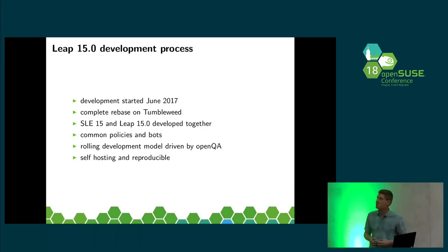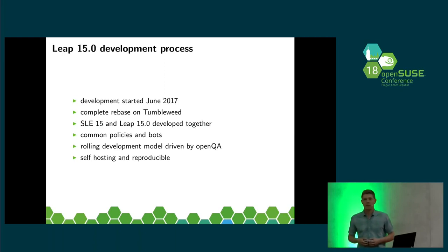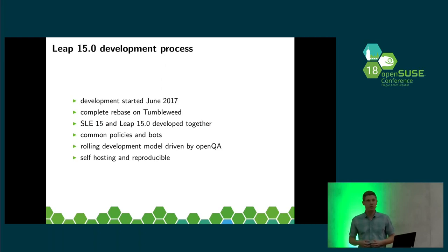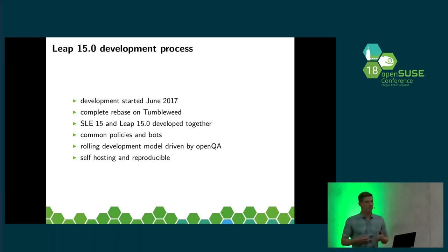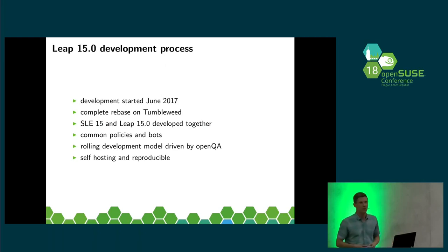Reproducible in the sense that the sources you have in OBS are the recipes to build the package. No local hacks by any developer. No binaries uploaded somewhere. We know all packages in Leap or in Tumbleweed built. So at the end of the development, really all packages were green — all of them built with all the packages that are in the project. That is something not all other distributions managed to do.